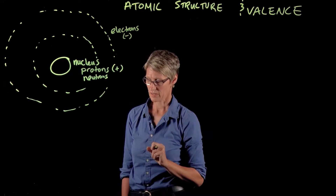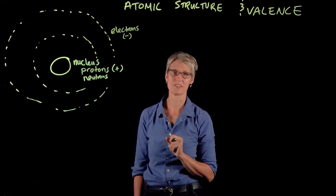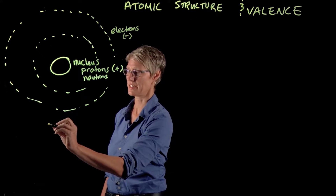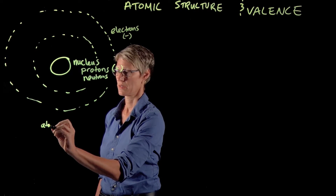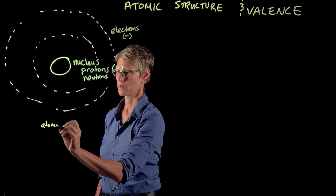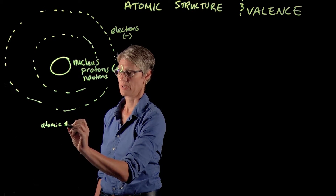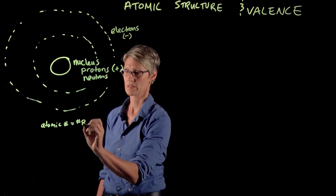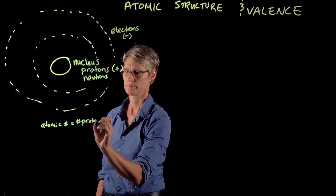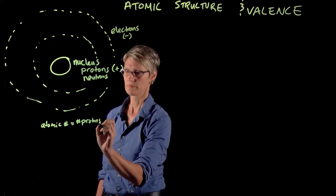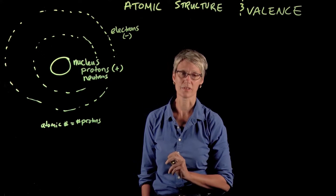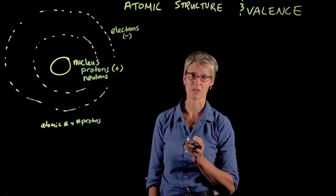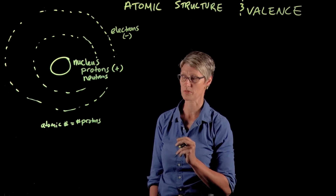A very useful property to define when you talk about atoms is something called the atomic number. The atomic number is equal to the number of protons in an atom, and it actually defines what element an atom belongs to — so that's defined by the number of protons.